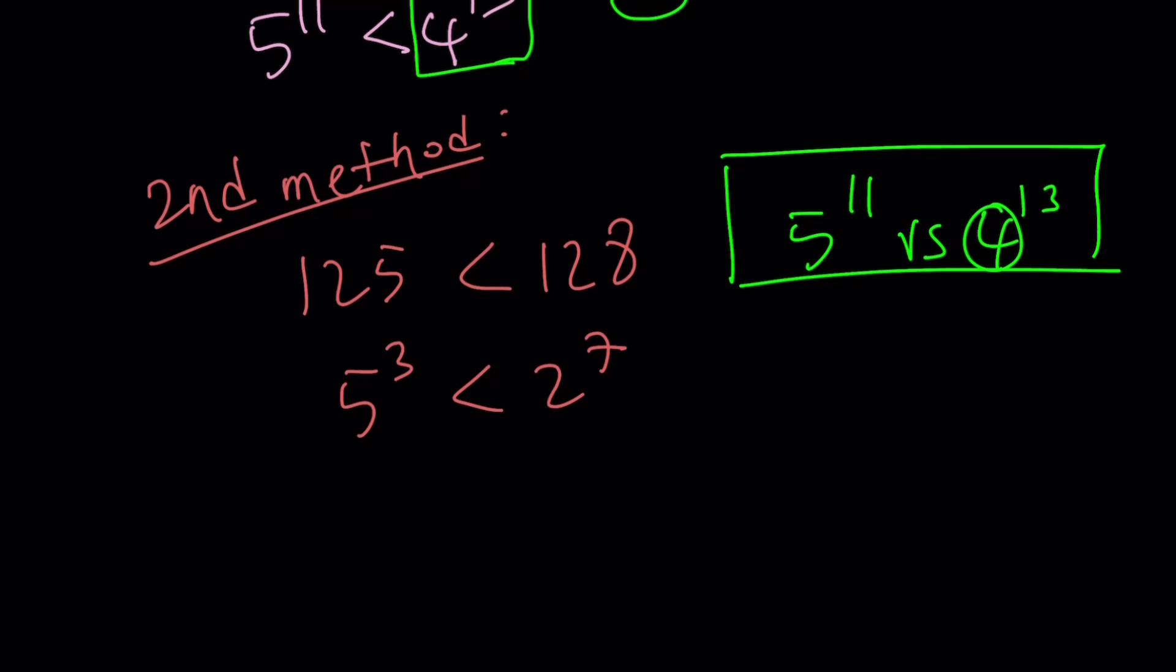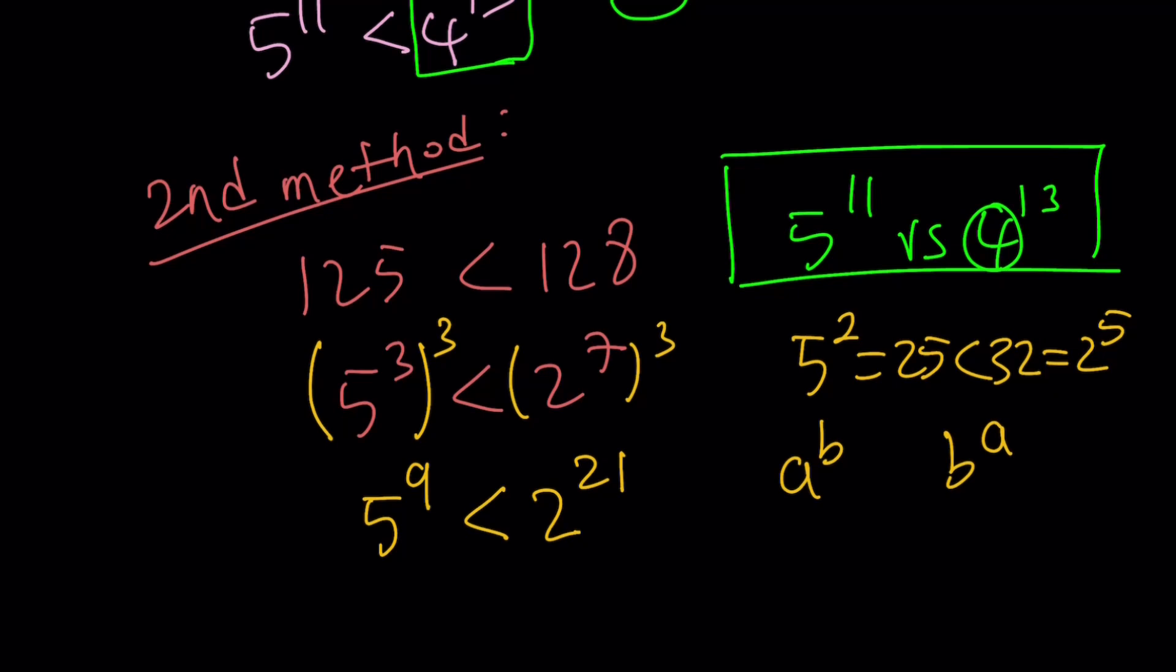We know that 5 to the 3rd is less than 2 to the 7th and I want to get to 5 to the 11th. So we cube both sides. This gives us 5 to the 9th is less than 2 to the power 21. I don't have 5 to the 11th but I'm going to use another comparison. 5 squared is 25, that is less than 32, and 32 is 2 to the 5th power.